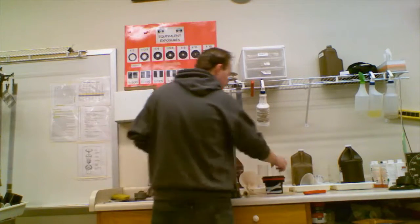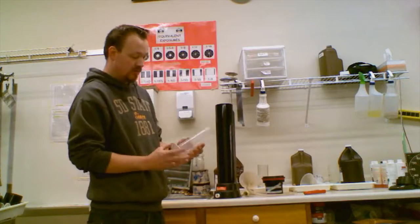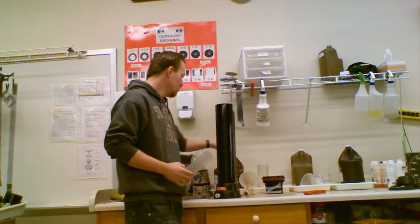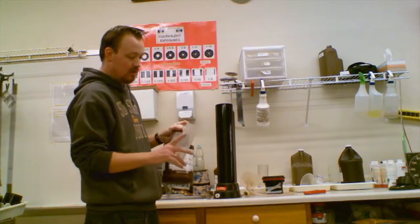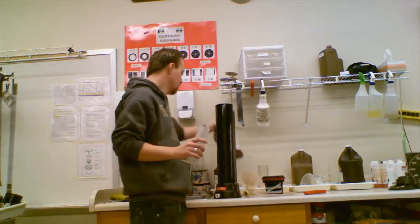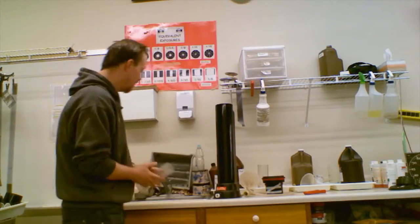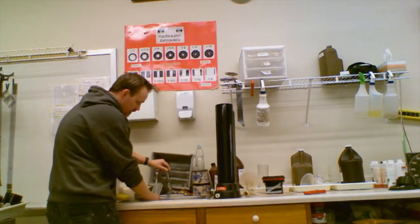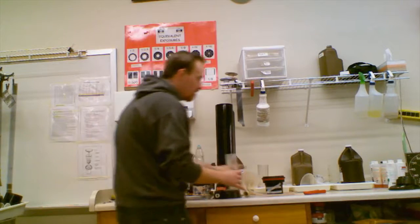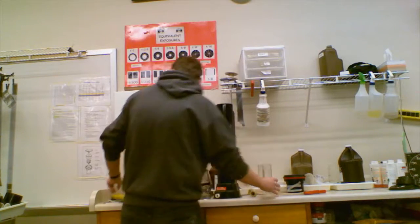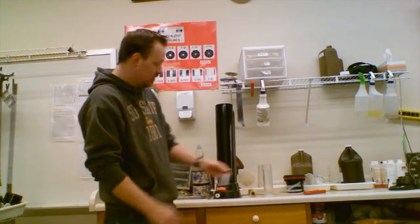First thing we're going to do is take one of our beakers and pour our developer, 10 ounces. Just to save time, we're going to use water real quick. We'll take our glass thermometer and measure the temperature.